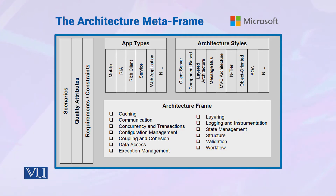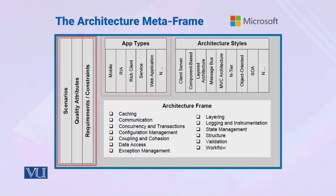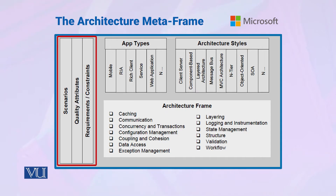There are two parts on the left side. One is the application type — you can decide what application type is. The other involves quality attributes, requirements, and scenarios.